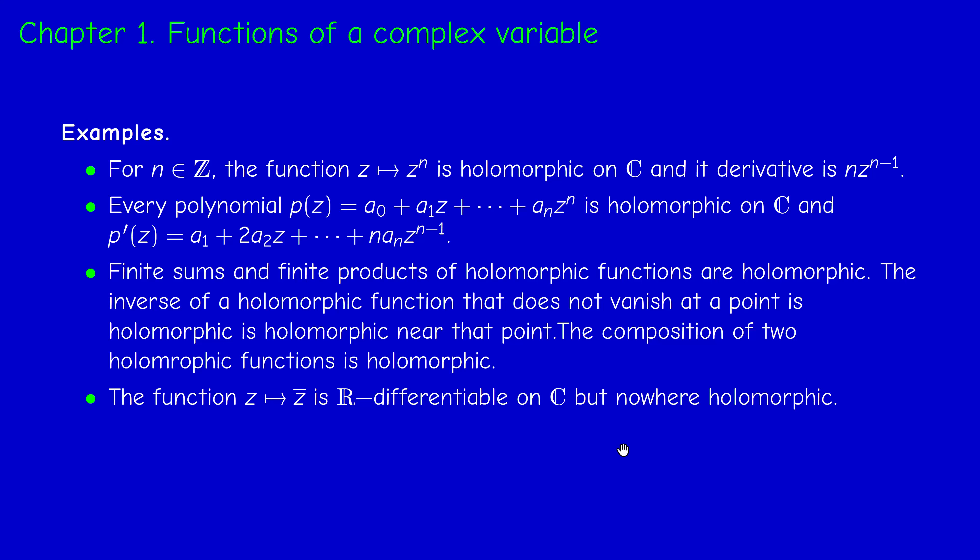However, consider z̄ (complex conjugate): if z = x + iy, then z̄ = x − iy. The components are x and −y, which are C∞. So the vector field (x, −y) is R-differentiable everywhere, but z̄ is nowhere holomorphic because the Cauchy-Riemann equations are nowhere satisfied. This is a counterexample proving that there are more R-differentiable functions than holomorphic functions.